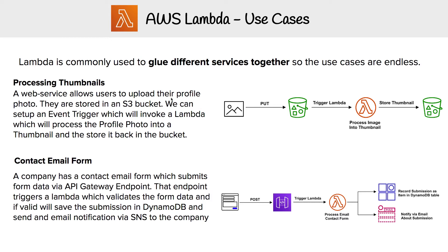I have two use cases here. The first is processing thumbnails. Imagine you are a web service and users are allowed to upload their profile photo. What you normally do is store that in an S3 bucket. You can set event triggers on S3 buckets so that it triggers Lambda, and then that image gets pulled from the bucket. Using something like Sharp.js or ImageMagick, you take that profile photo, crop it to a thumbnail, and store it back into the bucket.